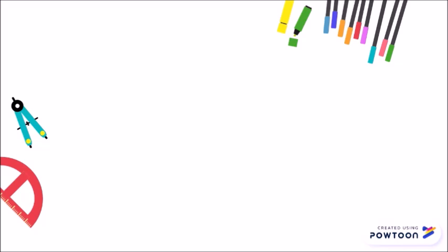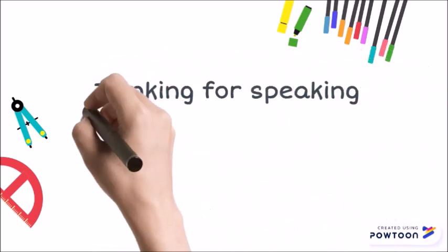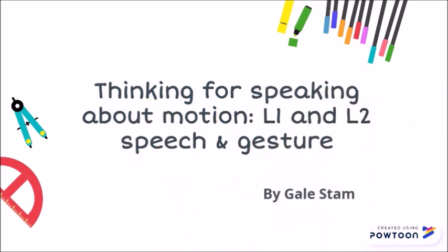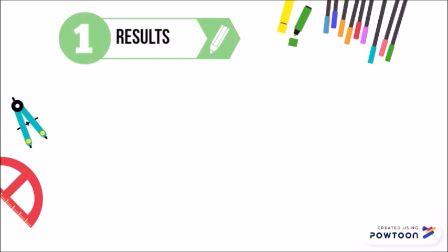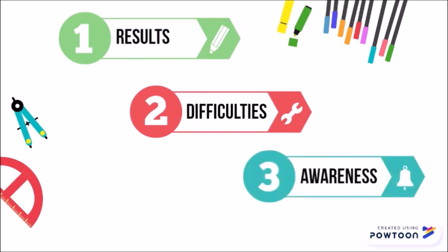We first study Gail Stam's research article, Thinking for Speaking about Motion, L1 and L2, Speech and Gesture. Her paper functions as a starting point for our analysis. In our video, we will explore the results of Stam's research, as well as the difficulties of learning and teaching motion in English. Finally, we will reflect on how to create awareness on this matter in the classroom.